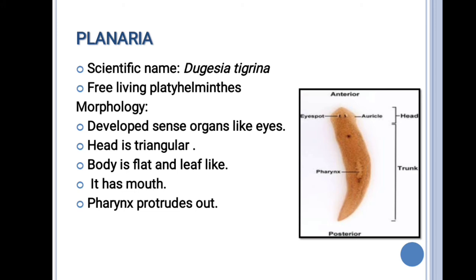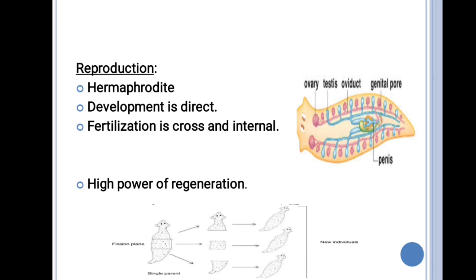The body is flat and leaf-like. It has a mouth and a pharynx which protrudes out from the mouth. Reproduction is hermaphroditic — they have both male and female sex organs. You can see in the picture that Planaria has both ovary and testes in the same body. Development is direct, fertilization is cross and internal. One important characteristic is that it shows a high power of regeneration — if the body is cut into pieces, every piece can give rise to a new Planaria.